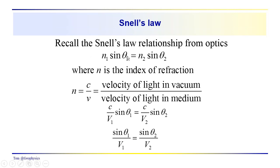To develop this relationship we go back to Snell's law. Reproducing the relationship familiar from optics, we have indices of refraction N1 and N2, with the angle of incidence in medium one and the angle of refraction in medium two. The index of refraction equals the ratio of the velocity of light in a vacuum to the velocity of light in the medium. In seismic we don't have a comparable vacuum velocity, so we cancel those out, giving us: sine theta one over V1 equals sine theta two over V2 — the form of Snell's law most frequently used in acoustic applications.